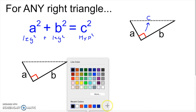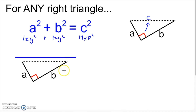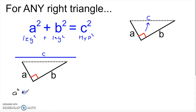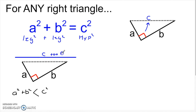Now imagine that we had a hypotenuse that was too long — what if my c was like this, just the longest side of the triangle? If I compute a squared plus b squared and compare to c squared, well, if c were the right length it would hold for the Pythagorean theorem — exactly equal to c squared. But my c is way bigger than it should be, so c squared is going to be bigger than a squared plus b squared. C is too big to make a right triangle.